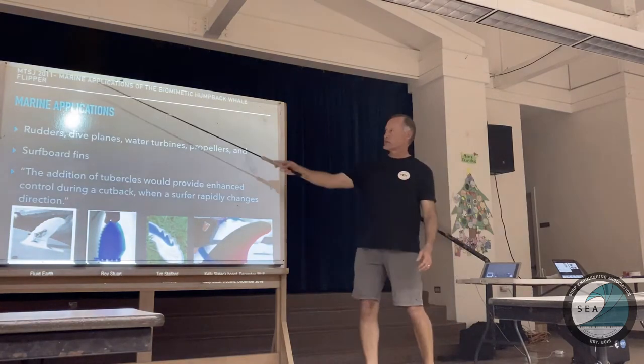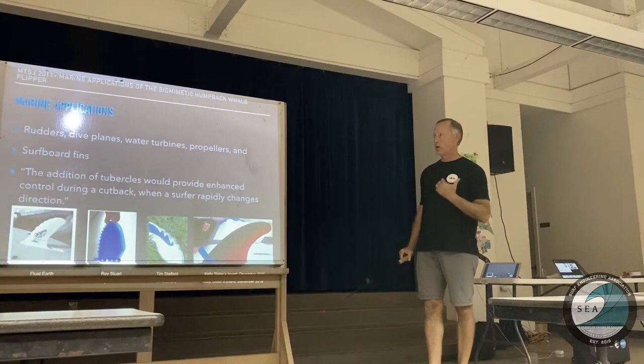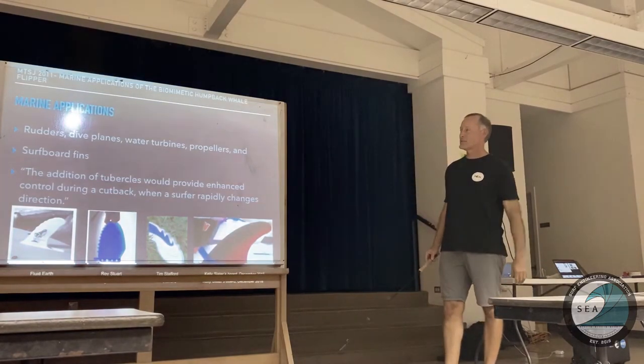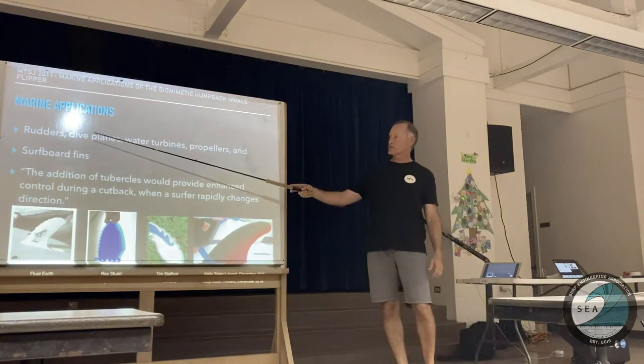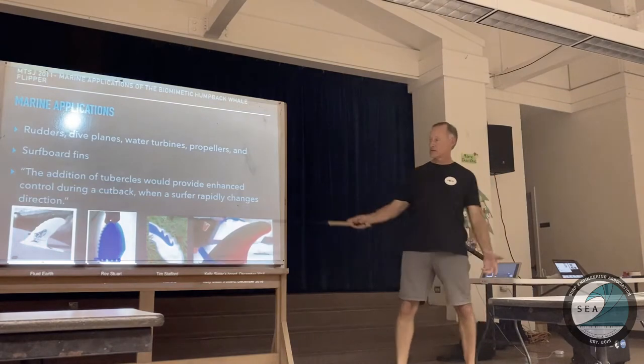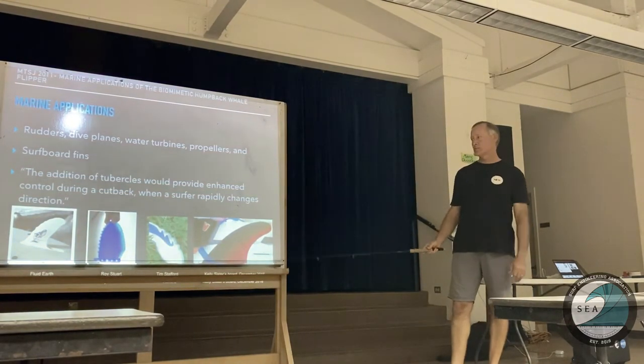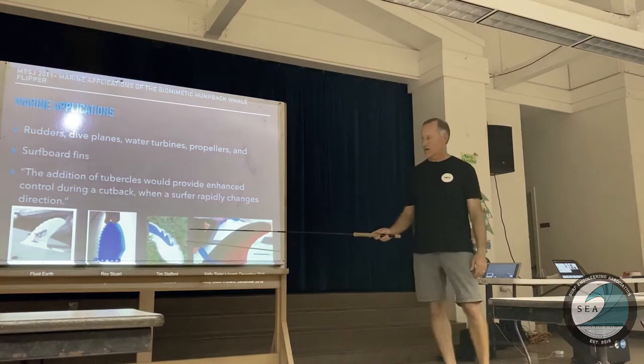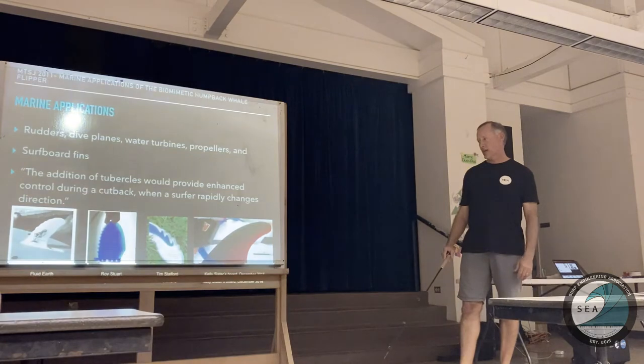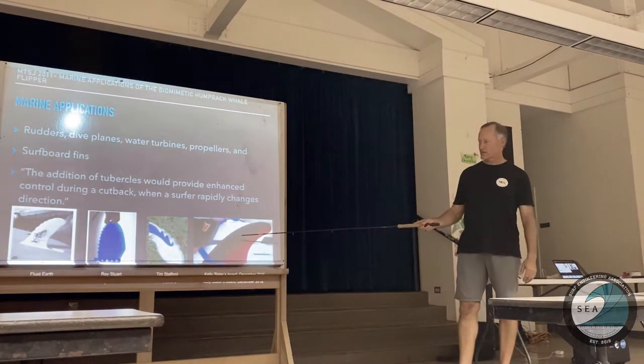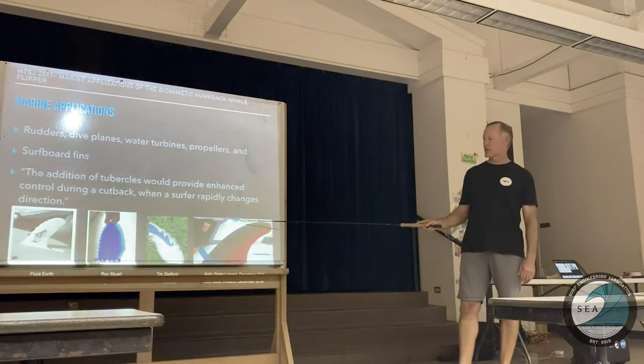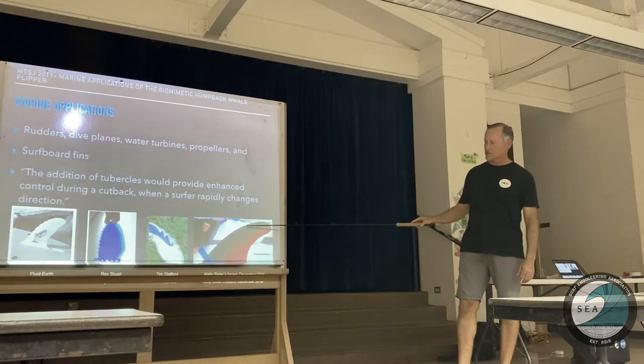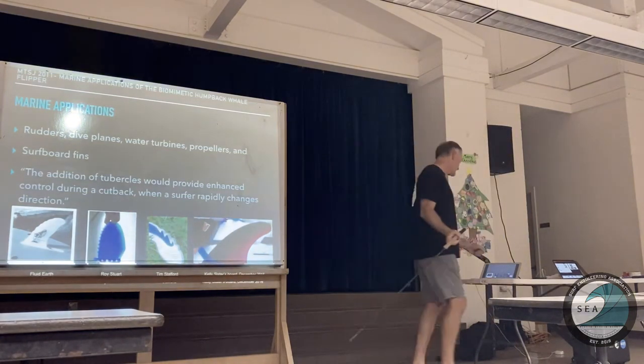So, there's a 2011 research paper that I looked at, and one of the main researchers on this, believe it or not, his name is Frank Fish. And one of the first on tubercle designs, but he wrote this paper on marine applications, rudders, dive planes, water turbines, propellers, and, of course, surfboard fins. And from the paper, it said the addition of tubercles would provide enhanced control during a cutback when a surfer rapidly changes direction. So, here's a few designs of different people have come up with over the years. And I believe that was 2016, maybe, one of Kelly Slater's boards. And there is, what was it? There's one of the surf magazines had an article about this. But that's really not tubercles, that's more channels. Because a tubercle, it sticks out. But anyways, just being picky there.